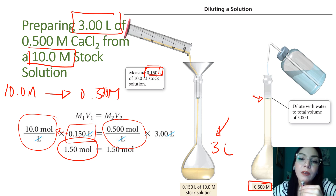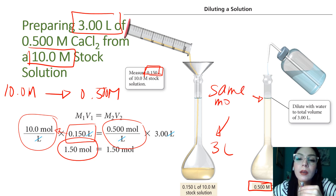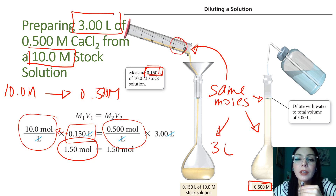This shows that moles do not change. In the original 0.15 liters of stock at 10 molar, you have 1.5 moles. In the final 3-liter dilution at 0.5 molar, you also have 1.5 moles — the same amount of moles in both the starting portion and the finished product.